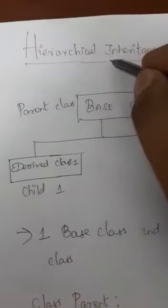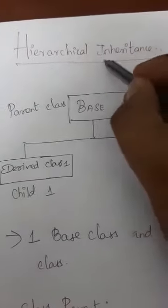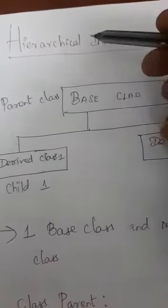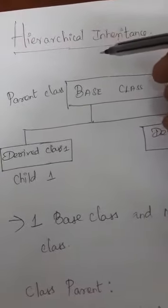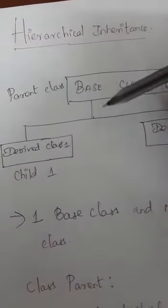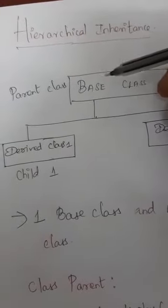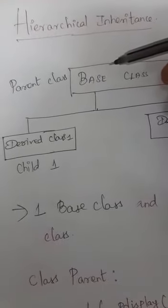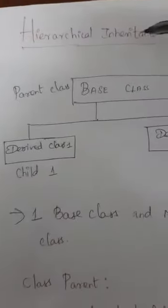In the previous video we saw multi-level inheritance. Now we are going to see hierarchical inheritance. Multi-level inheritance means you have different levels — one base class, another base class, and a last derived class, where the second class is both a base class and a derived class. Now, here is hierarchical inheritance.